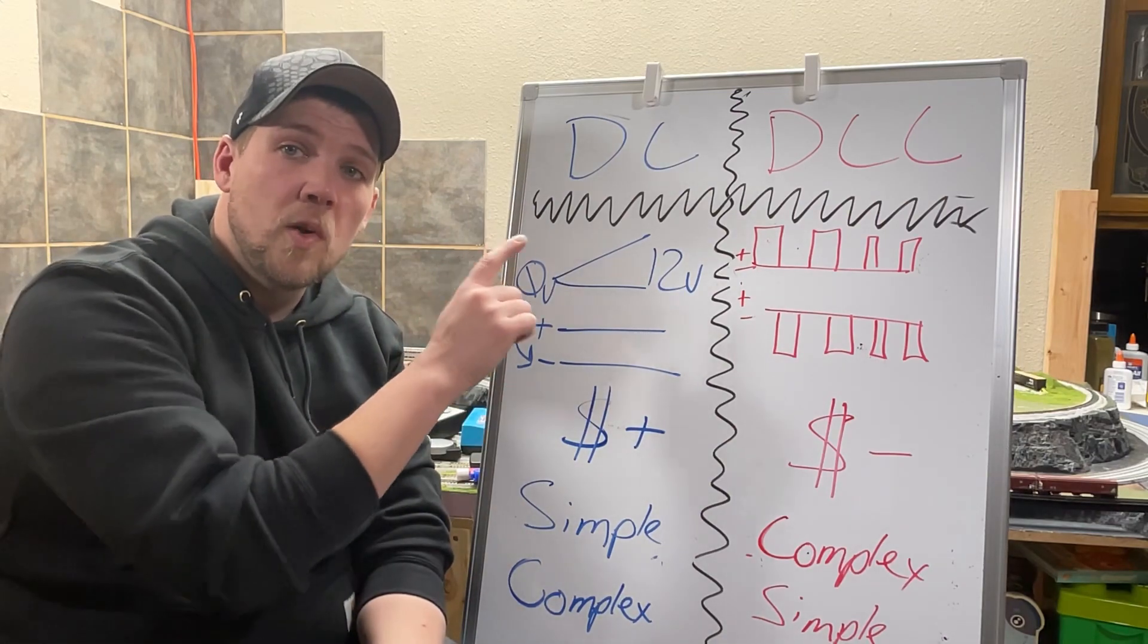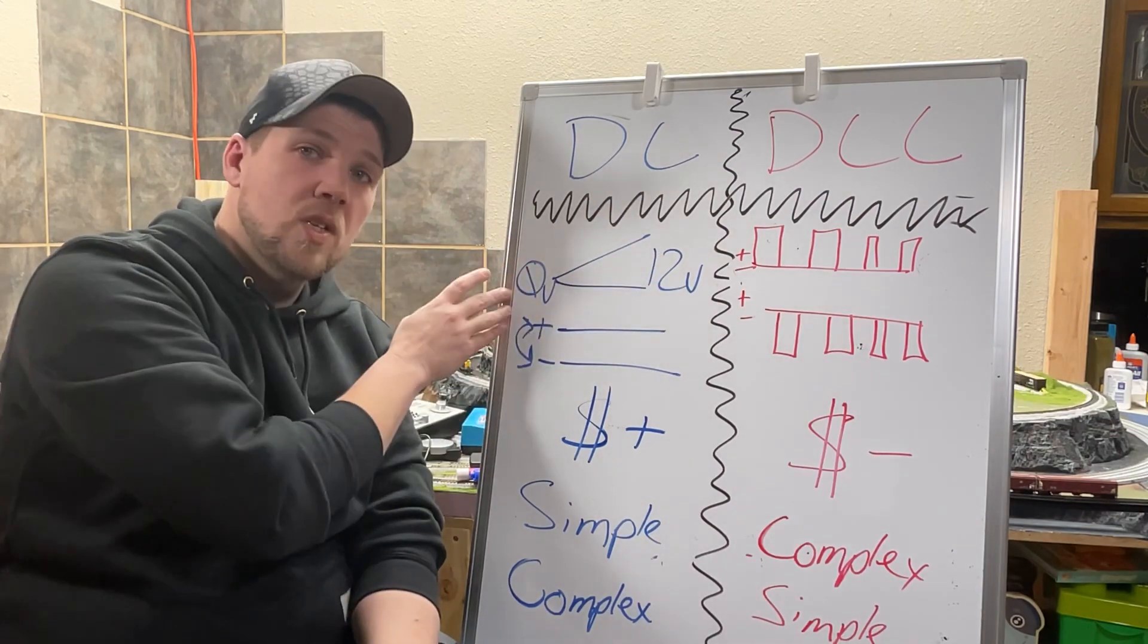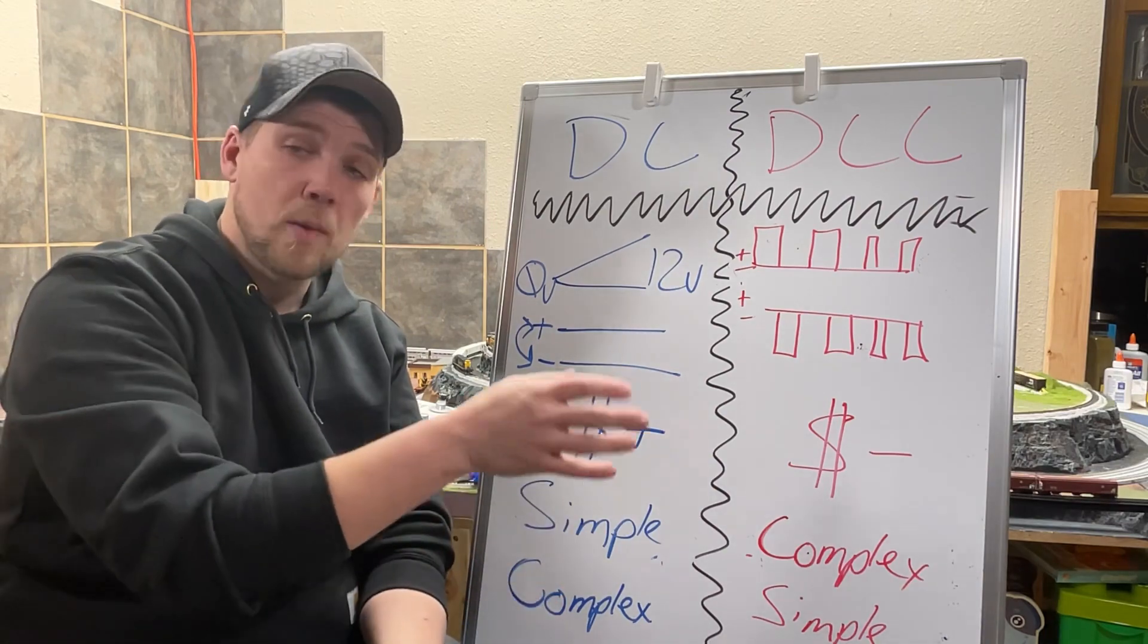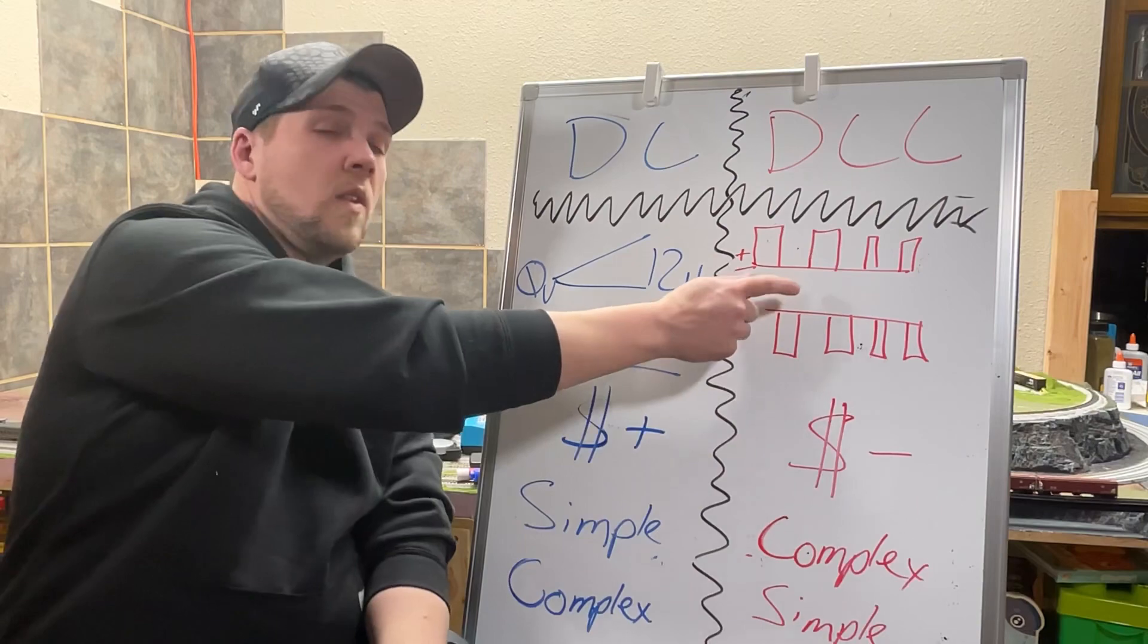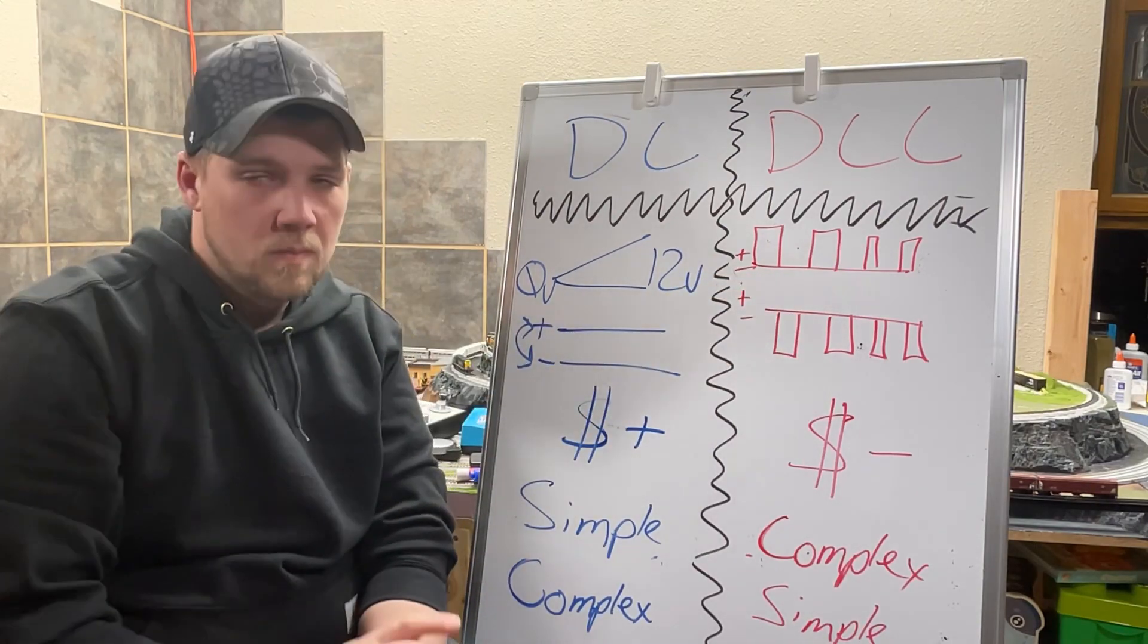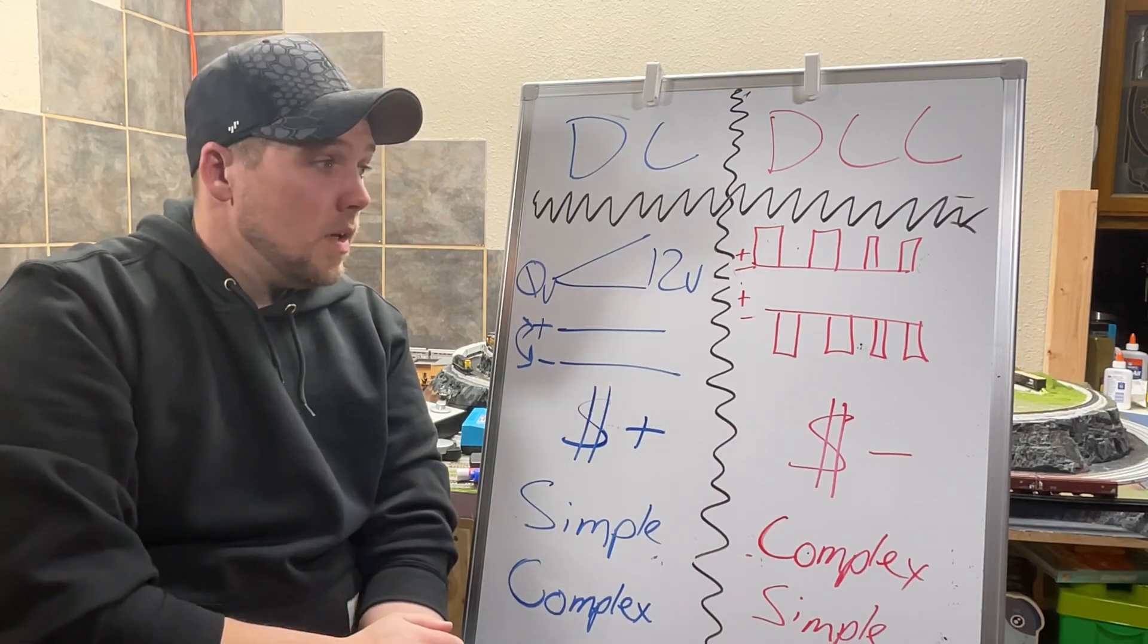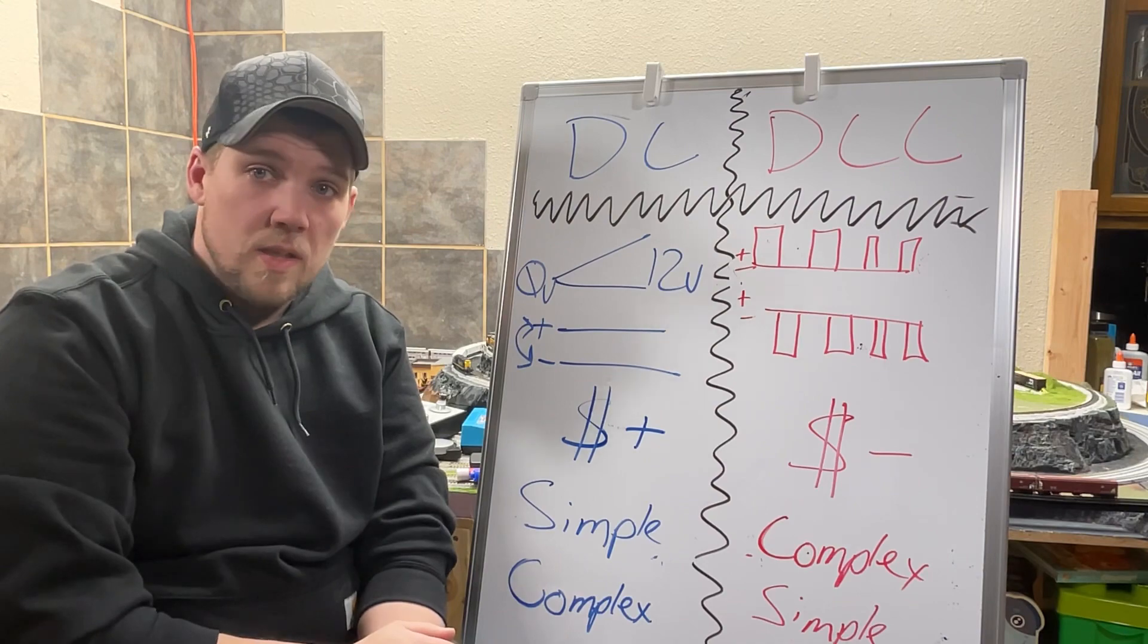So essentially what this means is there's always 12 volts to your decoder in this situation. So whether your locomotives are moving or not, they always have power. In this situation, if your locomotive isn't moving, there is no power. If you want a locomotive sitting on a siding with the lights dim, that can only be done essentially with the DCC system. That being said, there's also other things you can do with your DCC system.